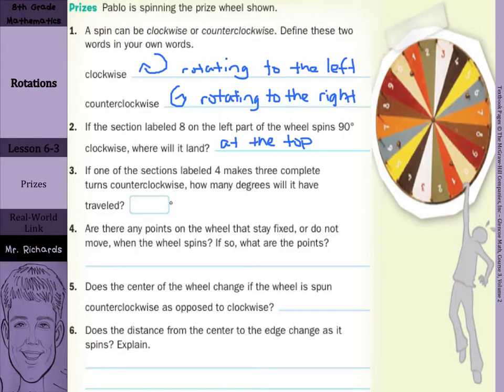If one of the sections labeled 4 makes 3 complete turns counterclockwise, how many degrees will it have traveled? Well, each turn is 360 degrees. And we're making 3 turns, so we can multiply that by 3 to get 1080. So 1080 degrees.